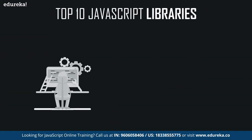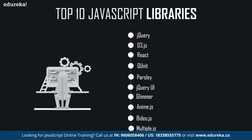Now let's have a look at the list of some of the most popular JavaScript libraries that help you perform complex tasks easily. So first we have jQuery, then we have D3.js, then React, QUnit, Parsley, jQuery UI, Glimmer, Anime.js, Video.js, and finally Multiple.js. These are some of the most popular and commonly used libraries in JavaScript for various applications, so let's get into the depth of all of these libraries and see how they work and why we need to use them.